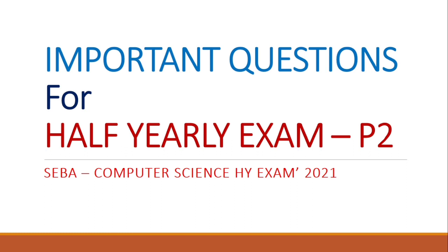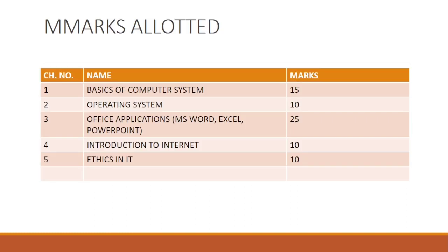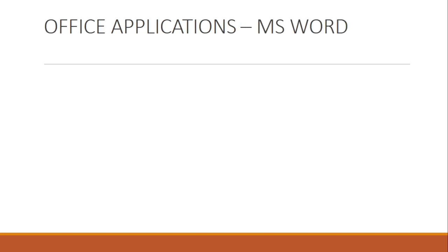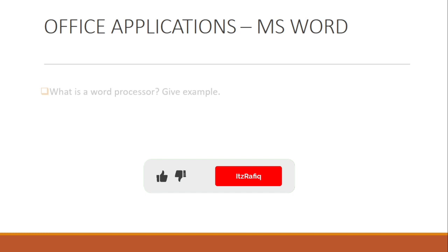Now let's come to the third chapter, which is MS PowerPoint. The mark distribution is as follows: chapter 1 is 15 marks, chapter 2 is 10 marks, chapter 3 is 5 marks, chapter 4 is 25 marks, chapter 5 is 10 marks, and chapter 5 part two is 10 marks — total 70 marks, and 30 marks for practical.